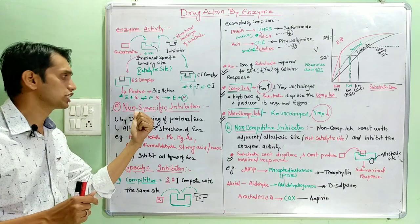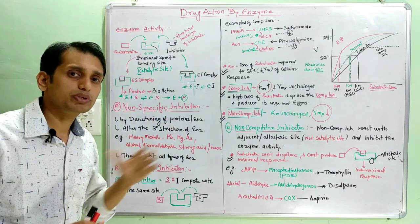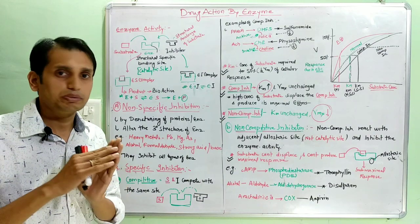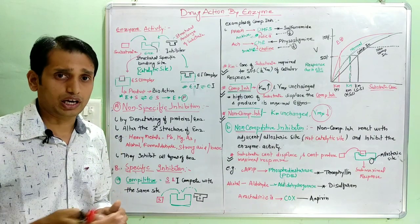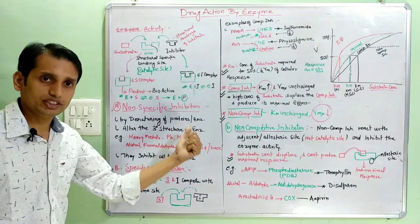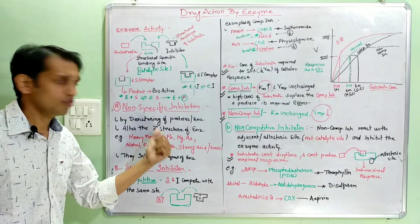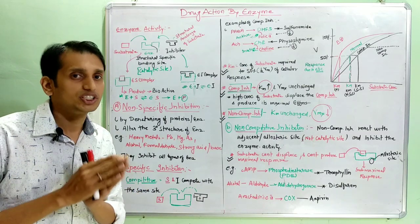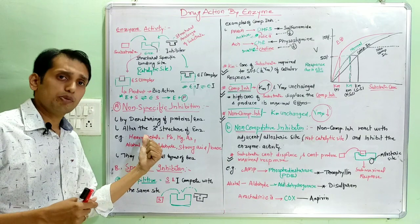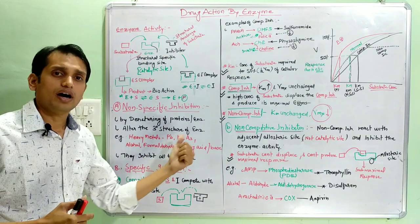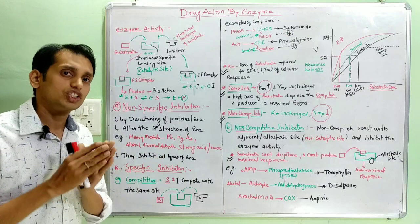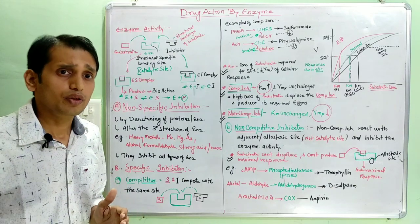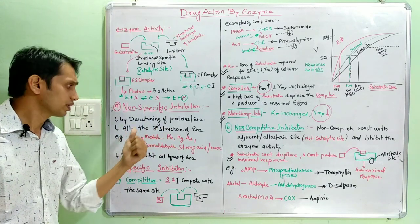In non-specific inhibition, the drug molecule can inhibit any enzyme — it is not structure-specific. It can inhibit any enzyme by denaturing the protein enzyme or by altering the tertiary structure of the enzyme. Examples include heavy metals like lead, mercury, arsenic, and also alcohol, formaldehyde, strong acids, and strong bases. These react with the enzyme and inhibit their activity by denaturing them or altering their tertiary structure.